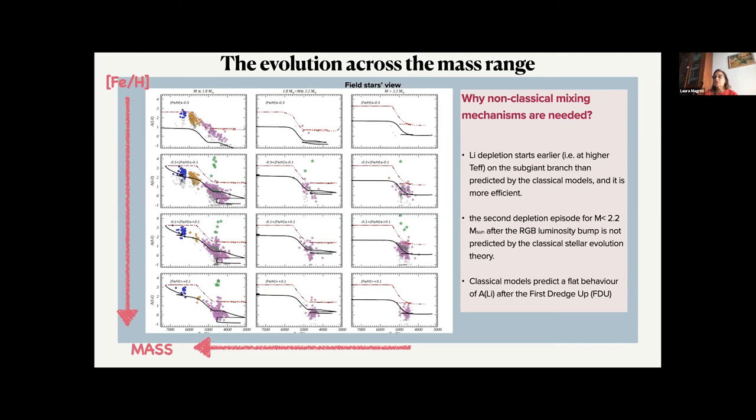Since the models with only convection would produce a flat behavior of lithium after the first dredge-up, having a sort of plateau around lithium abundance of 1.5 dex. And we need indeed an extra mixing effect to reproduce the data.